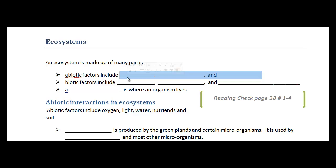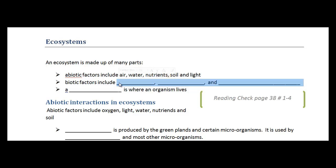And we've already talked about abiotic factors and biotic factors. Abiotic factors include air, nutrients, water, soil, and light. Where biotic factors, that word bio means living. So the biotic factors are the living things, which include plants, animals, and microorganisms.